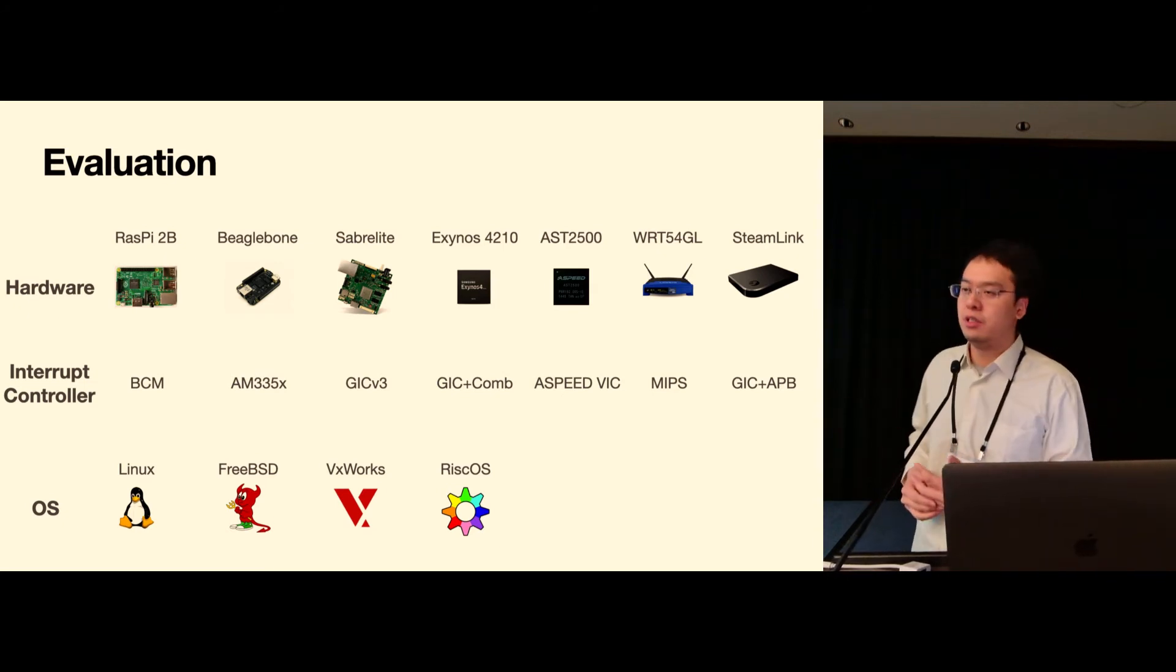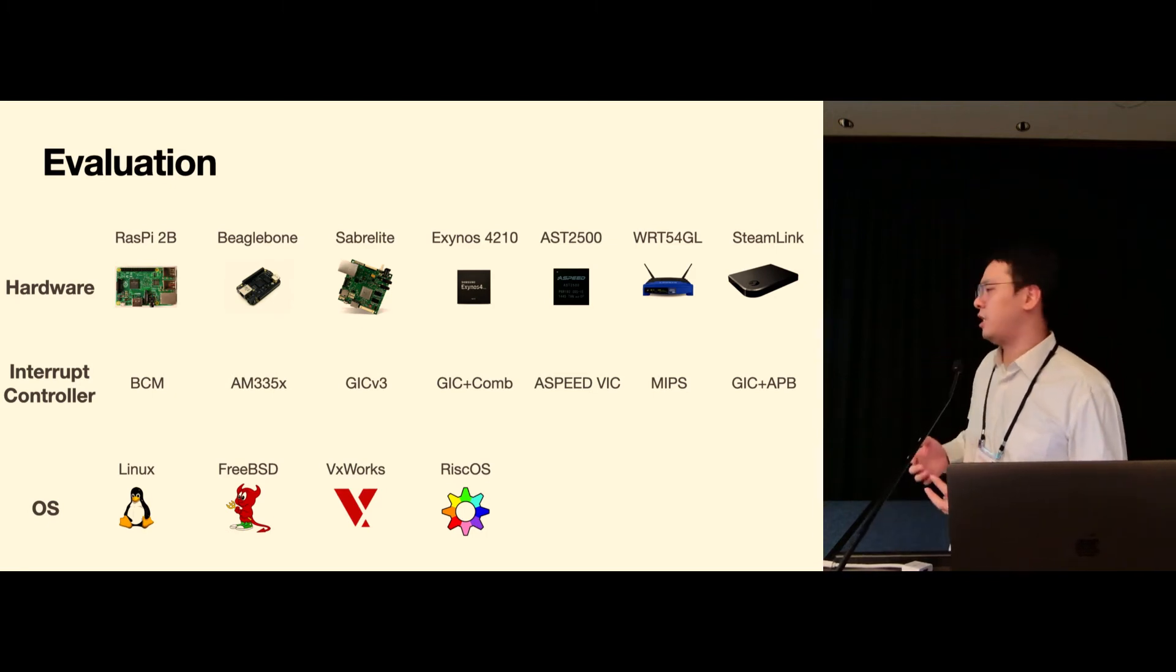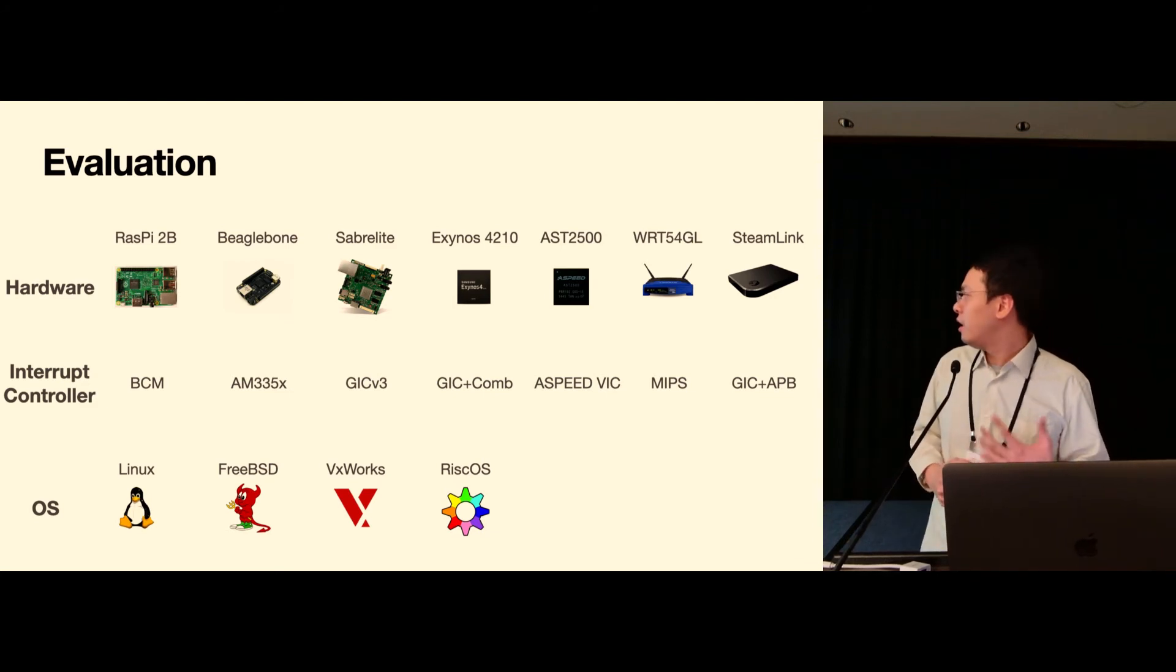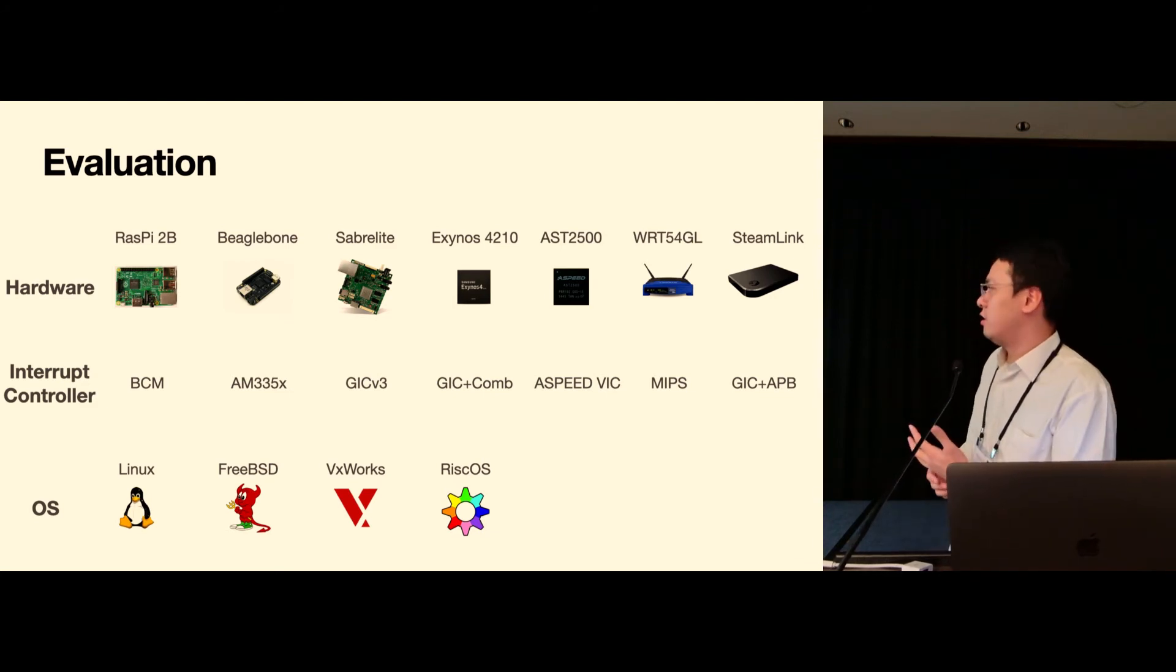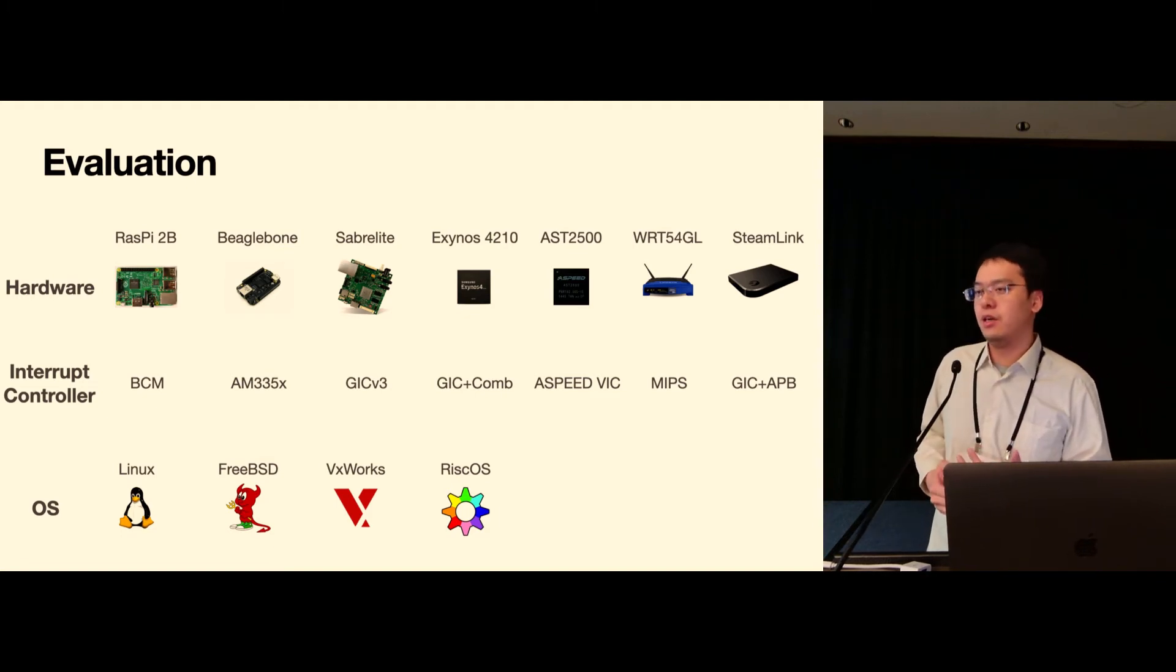We also included two devices that has already been implemented in QEMU, which are a Samsung Nuri board and Aspeed Romulus board. We also included this WRT54GL as an example of a MIPS device, since all the other hardware devices are ARM architecture.